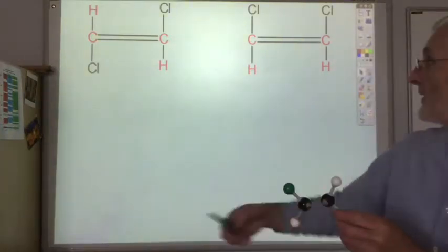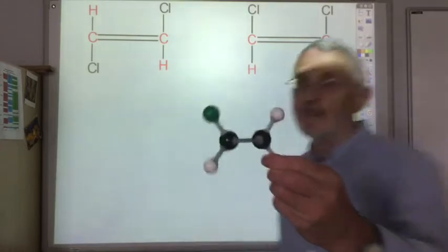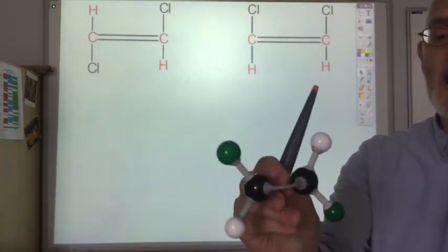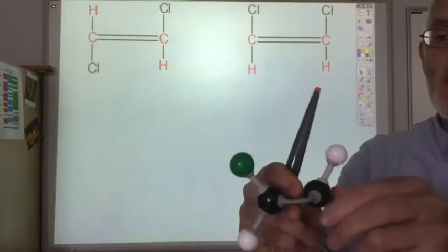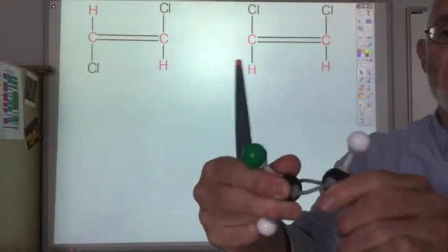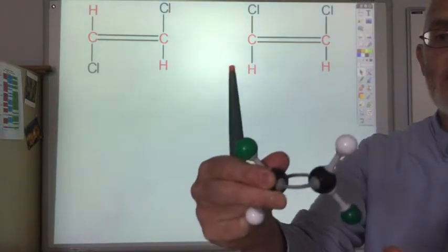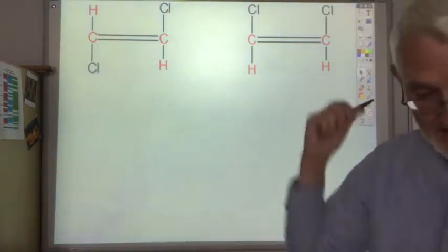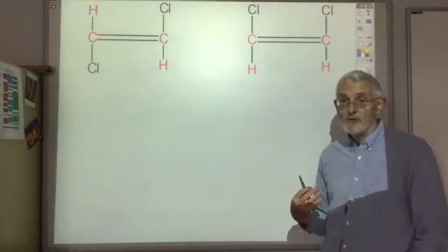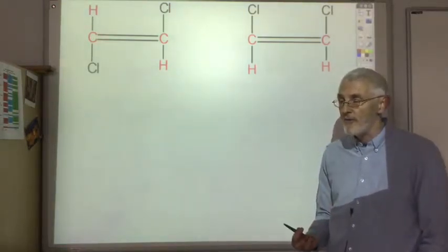So this is this molecule here. We see the chlorines are on different sides. But this one doesn't rotate, so we can't get the chlorines both on the same side. So these are different molecules, these are isomers, and because they're different molecules we need different names for them.